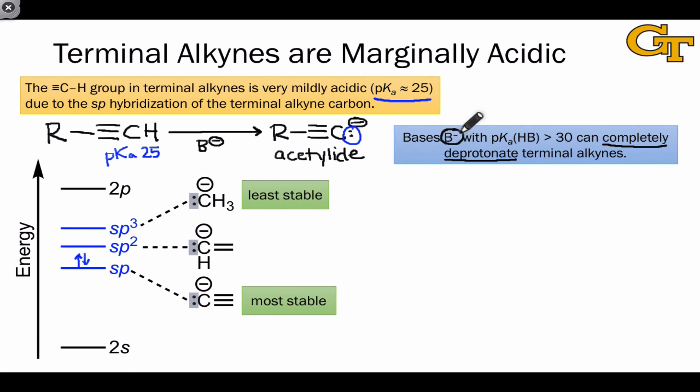These bases will universally be negatively charged and will come along often with an alkali metal cation, and will commonly be things like NH2- in something like sodium NH2 or lithium NH2, H- or hydride in something like sodium or lithium hydride, and you might even see other carbanions used for this purpose, such as the methyl anion CH3-.